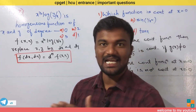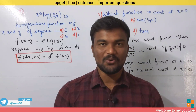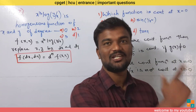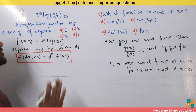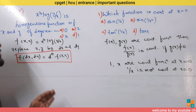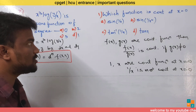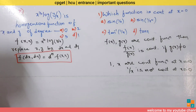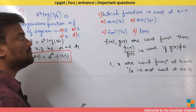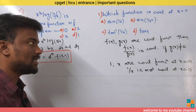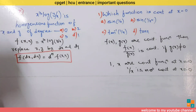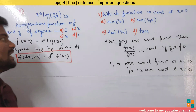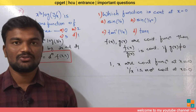Before starting today's session, subscribe to my YouTube channel and follow me on Telegram for more updates. Now let's start. The first question: which function is continuous at x equals 0? We have four options — option A: sin(1/x), option B: sin(1/x²), option C: tan⁻¹(1/x), option D: tan x.